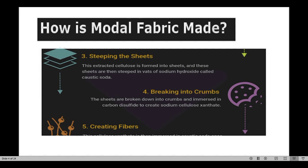The fourth step in Modal manufacturing is breaking into the crumbs. These sheets are broken down into crumbs and immersed in carbon disulfide to create sodium cellulose xanthate, and crumbs are produced. This is the fourth step in the manufacturing of Modal fabric.